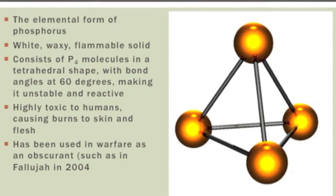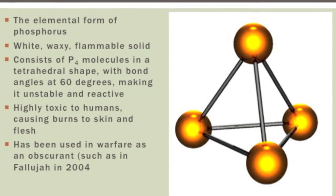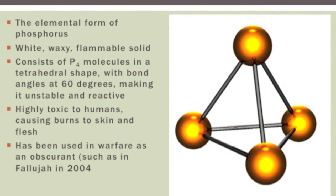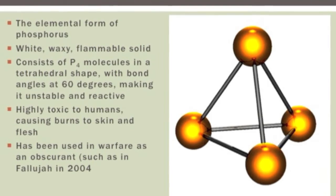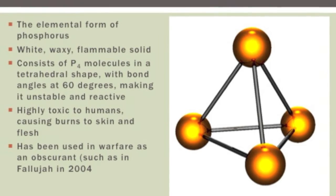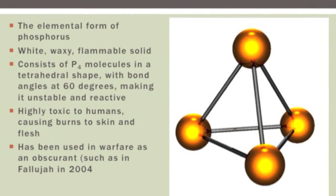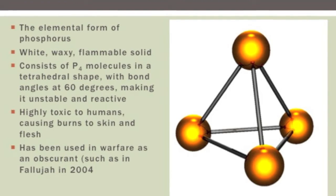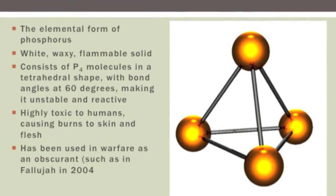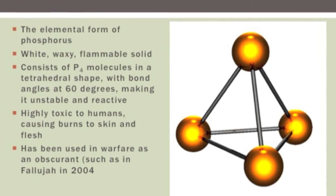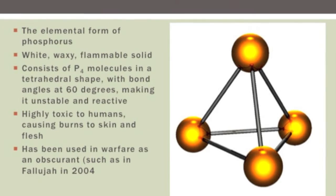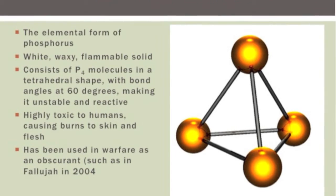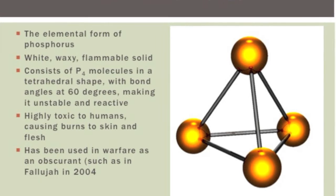White phosphorus is the elemental form of phosphorus, which is a white, waxy, flammable solid. What makes white phosphorus interesting is that its molecule, P4, has a tetrahedral molecular geometry, but it has a small bond angle of about 60 degrees. Because of this unstable geometry, it gives white phosphorus its unstable and reactive nature. It is highly toxic to humans.